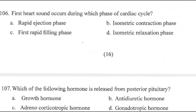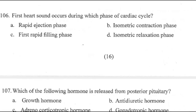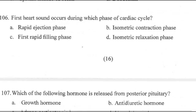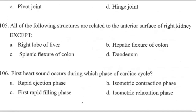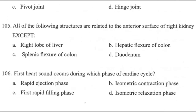Question 106: The answer is B — isometric contraction phase. Options were: A, rapid ejection phase; B, isometric contraction phase; C, first rapid filling phase; D, isometric relaxation phase.